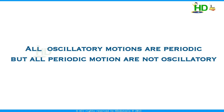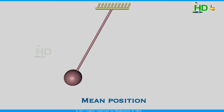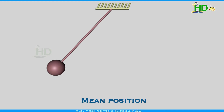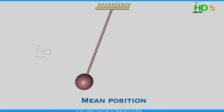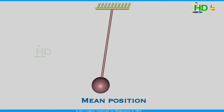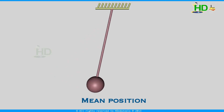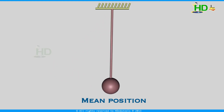Consider a pendulum. This position is called the mean position or equilibrium position. When you pull this pendulum and leave it, it oscillates about this mean position. When it stops the oscillatory motion, it comes to rest at this position.